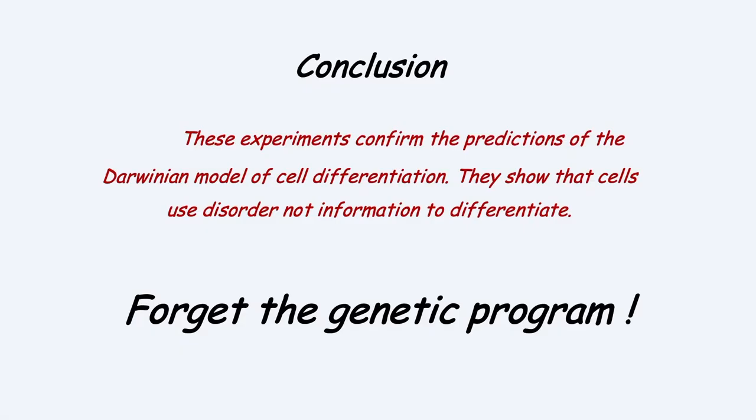In conclusion, the experiments that I have shown you — both the experiments performed in real cells and the computer simulation experiments — confirm the predictions of the Darwinian model. They show that cells do not use a deterministic program but rather disorder — stochastic gene expression — in order to differentiate.